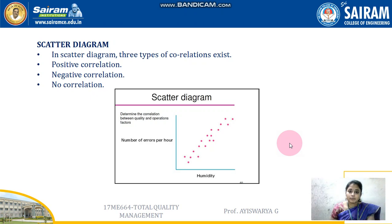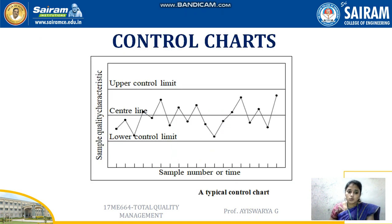Good morning all. In my previous lecture, we had seen about the scatter diagram and a cause and effect diagram. So in this lecture, I am going to mention about the other tools which are used for measuring objectives or measuring the issues in the quality process. So the next one is control charts.